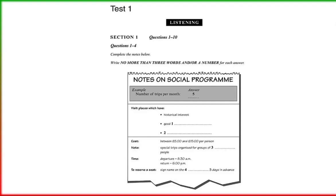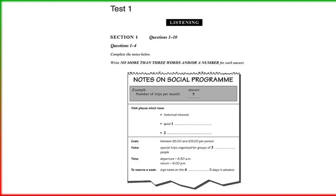You'll see that there is an example which has been done for you. On this occasion only, the conversation relating to this will be played first. The example shows that there are five trips every month, so five has been written in the notes. Now we shall begin. You should answer the questions as you listen because you will not hear the recording a second time.